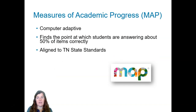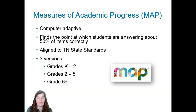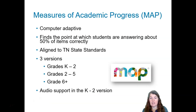This assessment is aligned to Tennessee state standards and there are three versions: a K through 2 version, a 2 through 5 version, and a 6 plus version. You'll notice that there's an overlap for second grade — in our district, we administer the grades 2 through 5 version in second grade. The difference between these versions is that there is audio support built into the K through 2 version. This allows us to assess skills such as letter sounds and things where audio is actually required to successfully assess the skill, and that's the version that we give in K through 1.